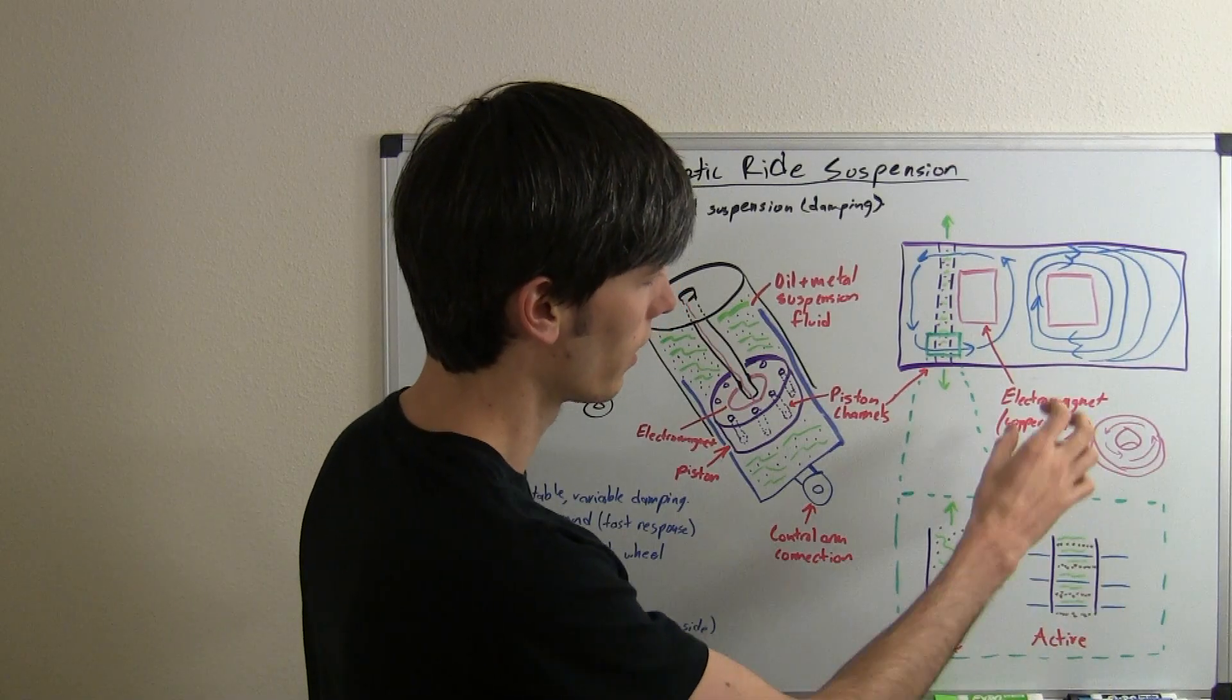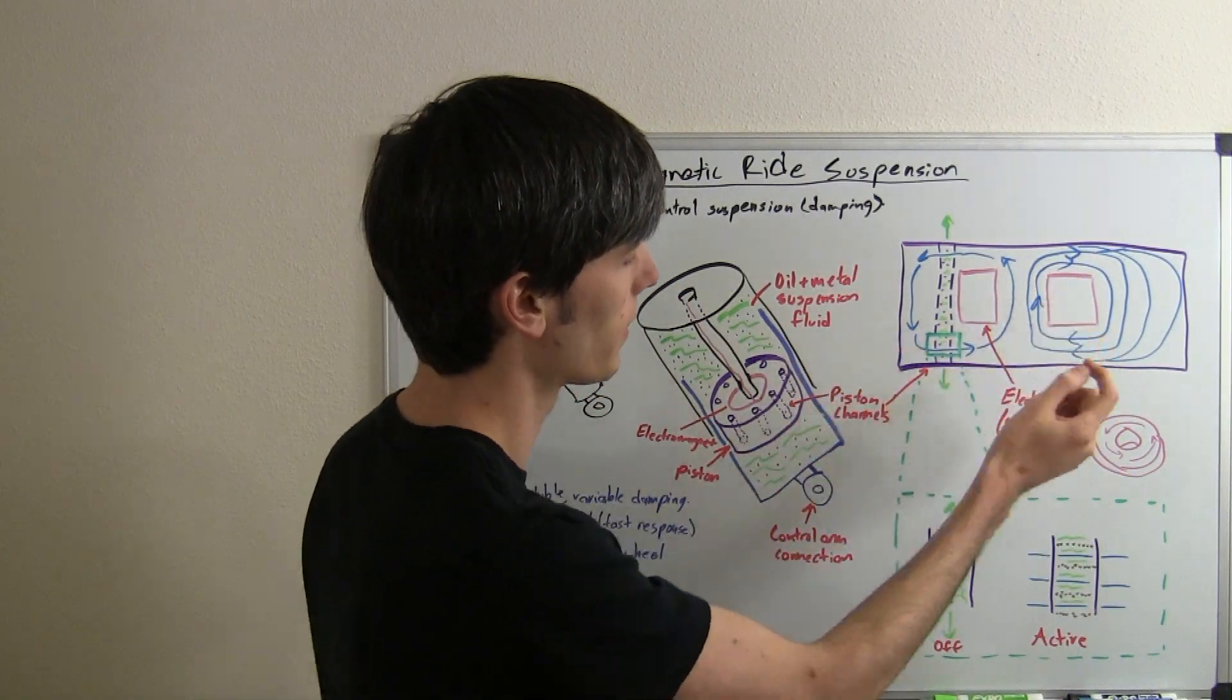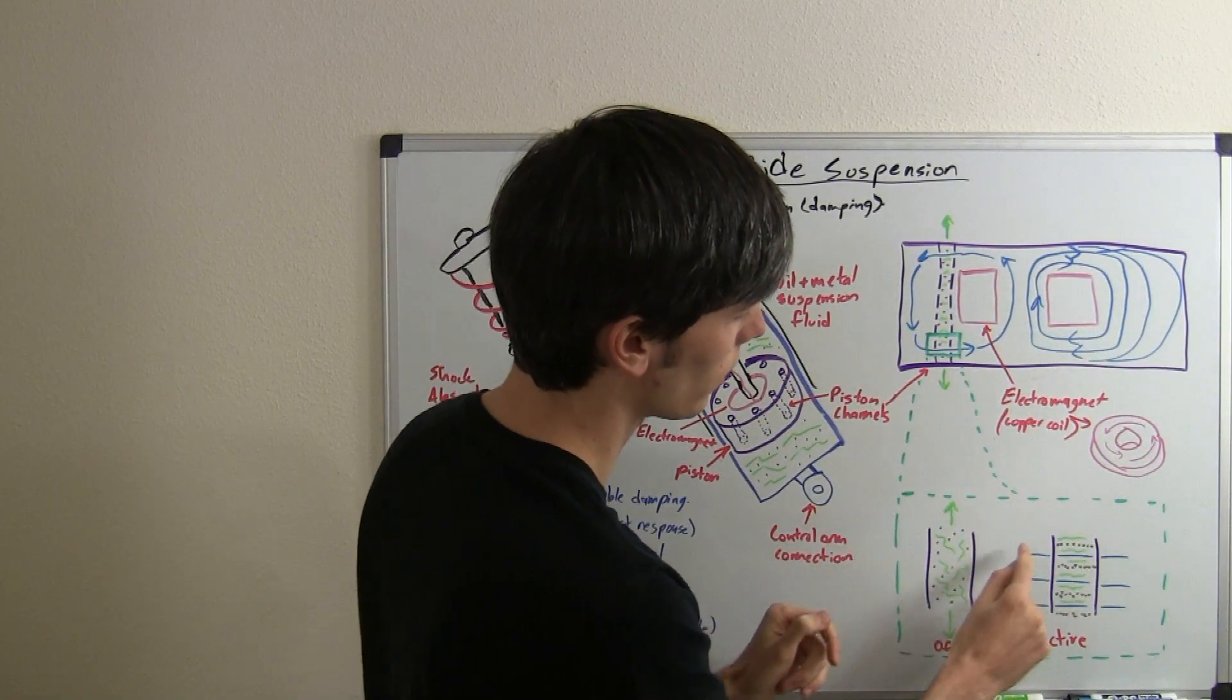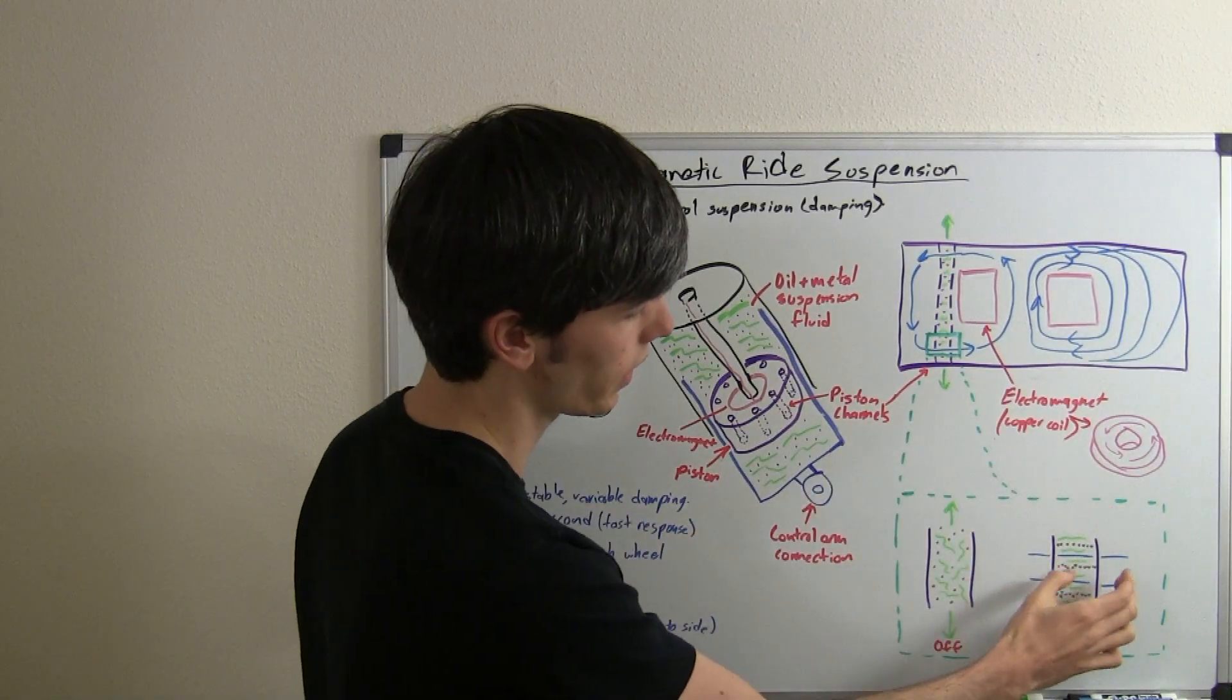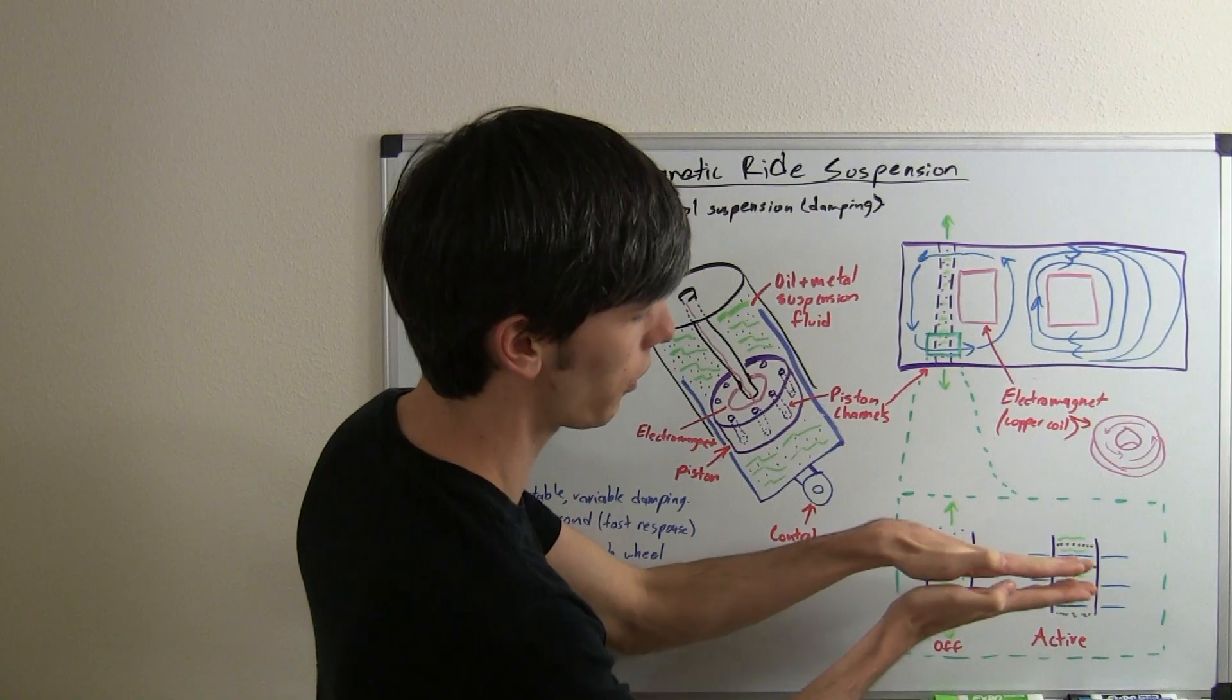Now, when you activate the suspension and you send a current through this electromagnet, then you're going to create this magnetic field. And what that does is it's going to line up all these tiny little magnetic particles inside of the suspension, and they're going to basically make this fluid a lot more thick.